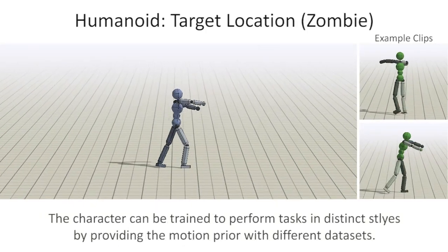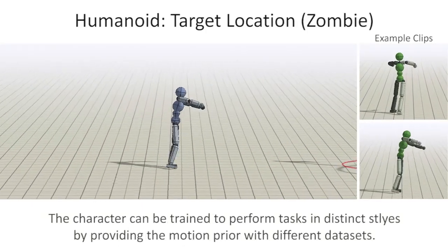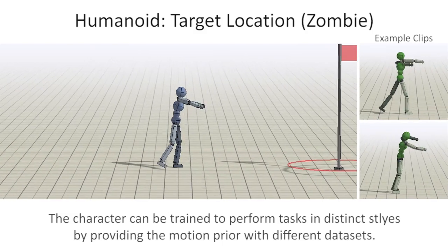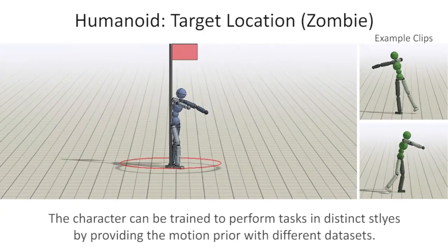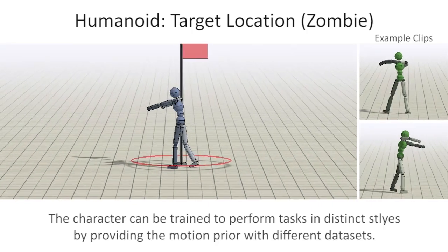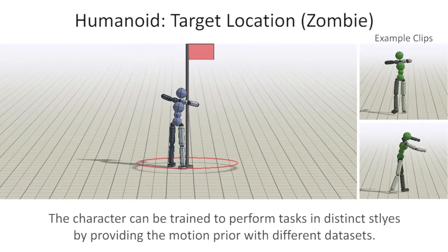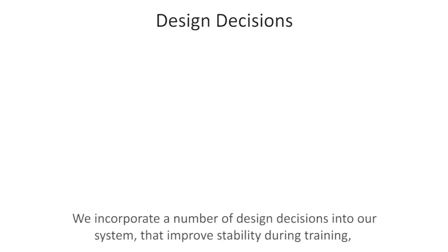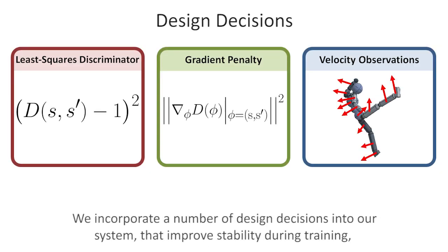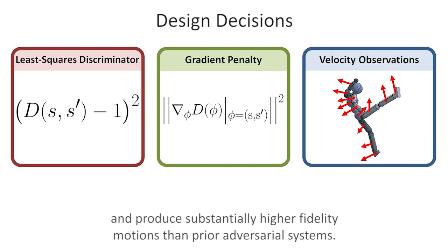The character can be trained to perform tasks in distinct styles by providing the motion prior with different data sets. We incorporate a number of design decisions into our system that improve stability during training and produce substantially higher fidelity motions than prior adversarial systems.